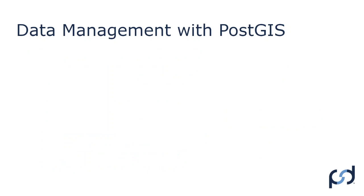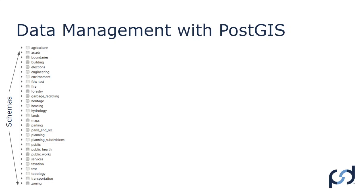This is pretty much how we set up any database for our clients. A database schema in Postgres is kind of like a file folder. We spin up a database with a series of schemas — file folders — where we can drop data: agriculture, assets, boundaries, and so on. Most clients might not have data to populate all of these, and we'll make the decision to remove or keep them based on potential future use. It gives the data some structure — rather than organizing data by department, it's more thematic.